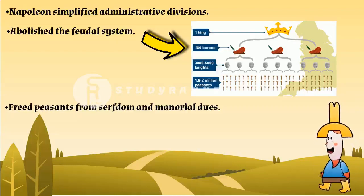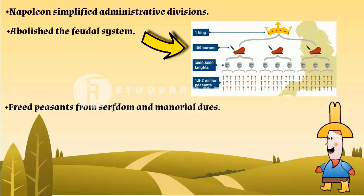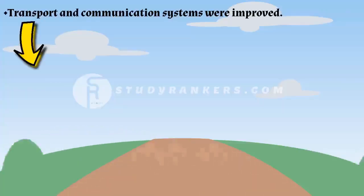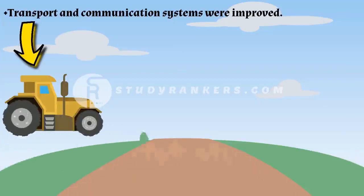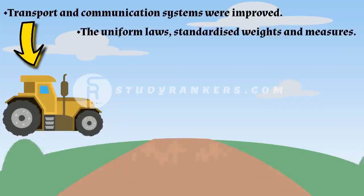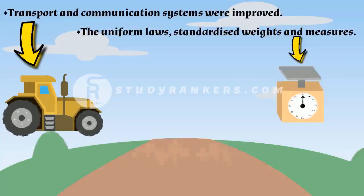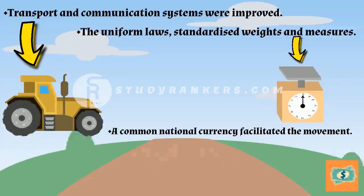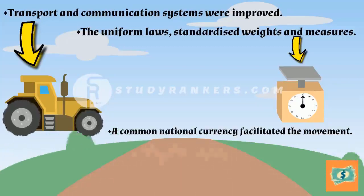Guilds are basically associations of craftsmen or merchants created to establish monopoly over trade. Transport and communication systems were improved, which helped peasants, artisans, workers, and new businessmen. Uniform laws, standardized weights and measures, and a common national currency facilitated the movement and exchange of goods and capital from one region to another. This proved very helpful for businessmen and small-scale producers of goods.